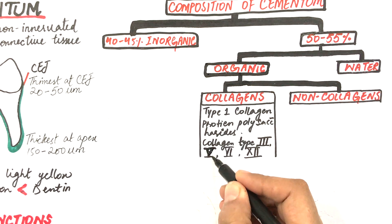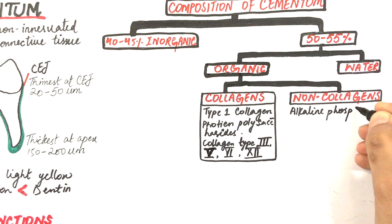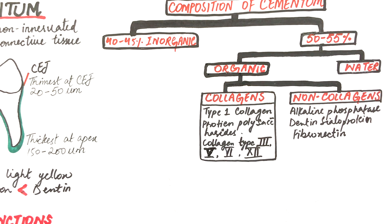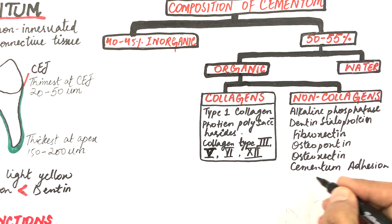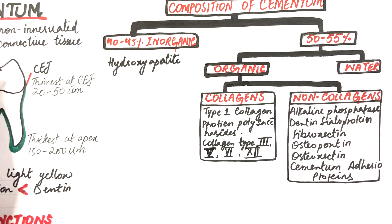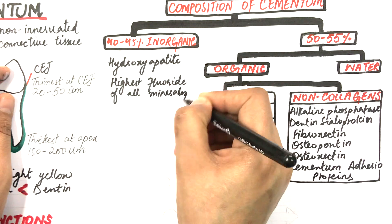The non-collagenous proteins are present in a wide variety and fill the spaces in between the collagenous proteins. Some listed non-collagenous proteins are alkaline phosphatase, dentine sialoprotein, fibronectin, osteopontin, osteonectin, and cementum adhesion proteins, along with some other types. The inorganic part of cementum consists mainly of hydroxyapatite crystals in the form of calcium and phosphate. Cementum has the highest fluoride content of all mineralized tissues of the body.